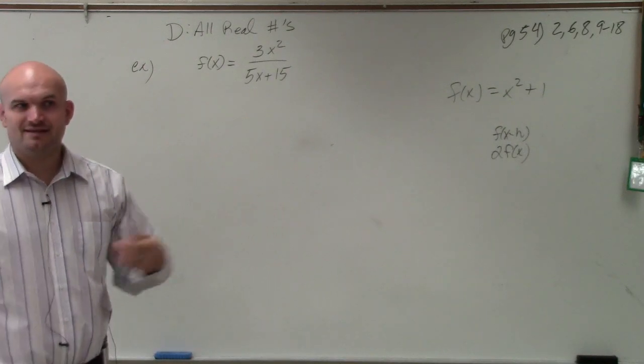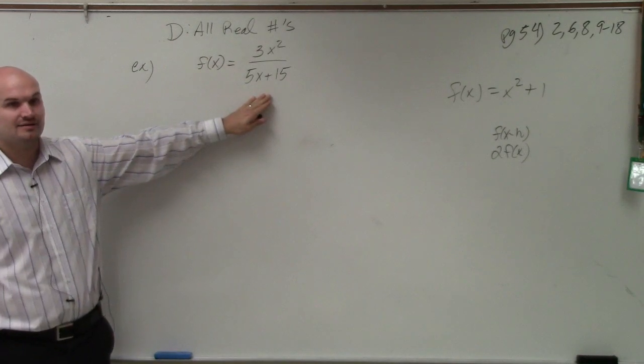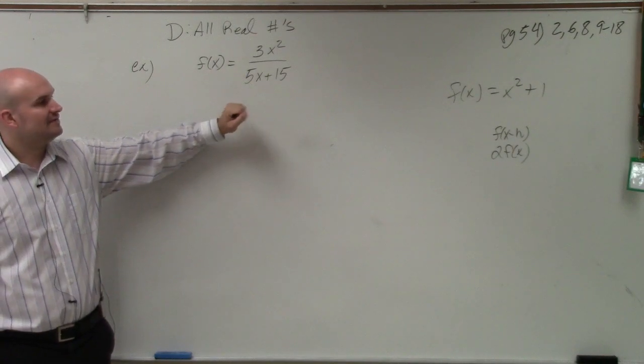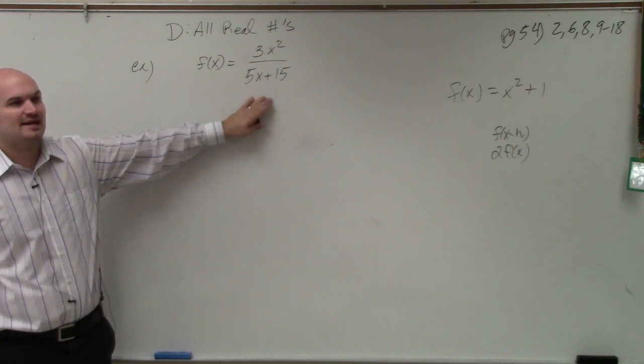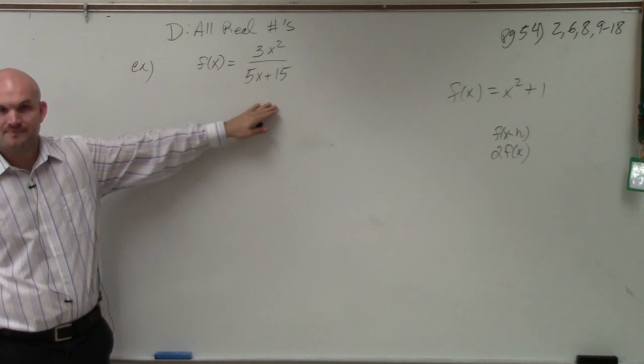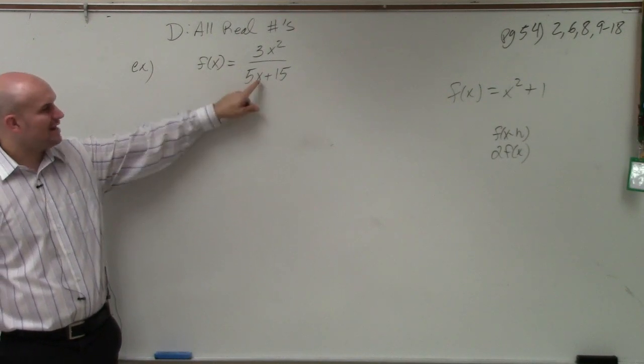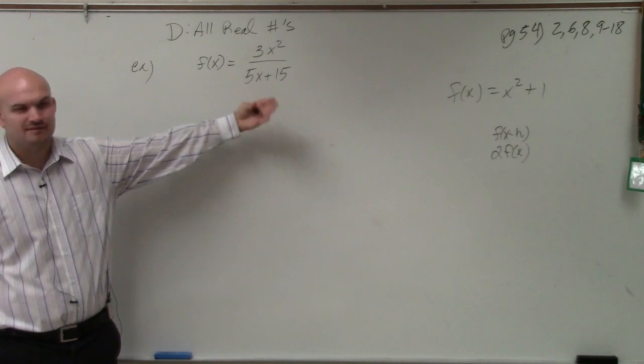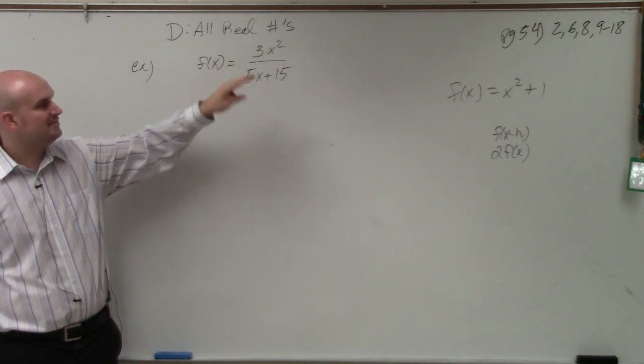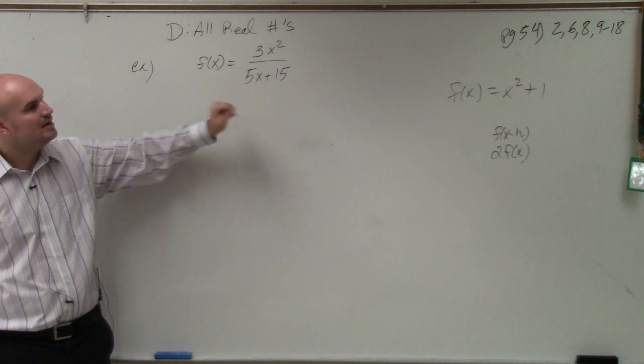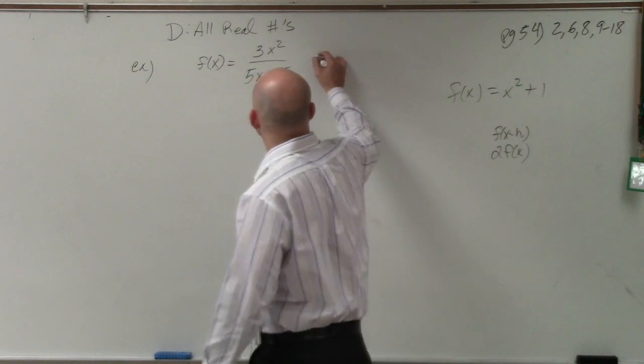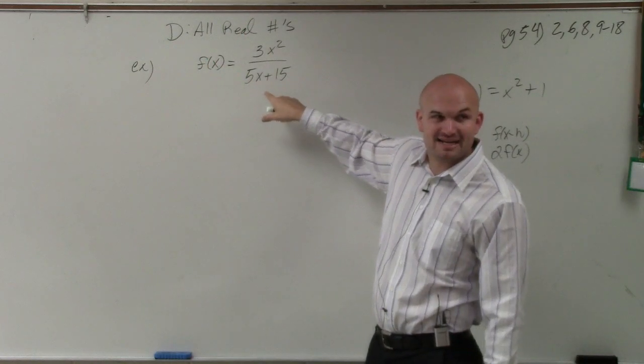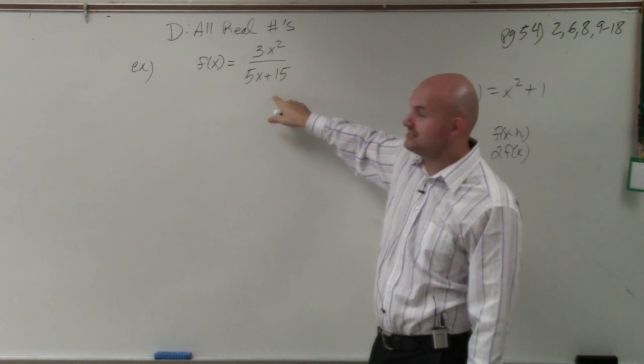we know that if we have a variable in the denominator, that that variable cannot - I'm sorry, if we cannot make that denominator equal to zero. So it's not that x can't be zero, because what happens if x is zero? Five times zero is zero, zero plus fifteen is fifteen. You can easily plug in zero for that. That's not going to change the answer. But what we need to do is to find the domain, even though it's not going to be all real numbers, because we know we can't divide by zero.